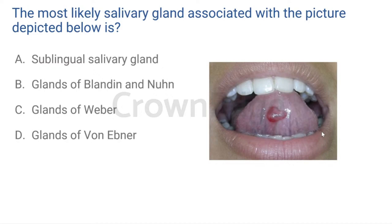An article in the Triple O Journal observed a number of people with mucoceles on the ventral surface of the tongue, concluding that these mucoceles had a female predominance, presented as exophytic masses with a polypoid appearance, and histopathologically were mostly mucous extravasation type due to trauma. This question itself leads to multiple follow-up questions about mucoceles associated with the glands of Blandin and Nuhn, and mucous extravasation versus retention type.